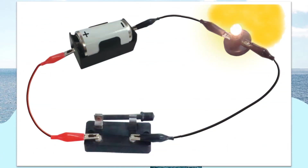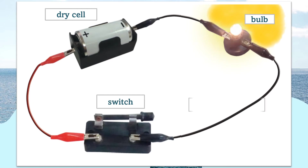Let us look at this picture. This is an example of a complete electric circuit. Here we have a dry cell, bulb, switch, and connecting wires. You can see that the bulb is on.